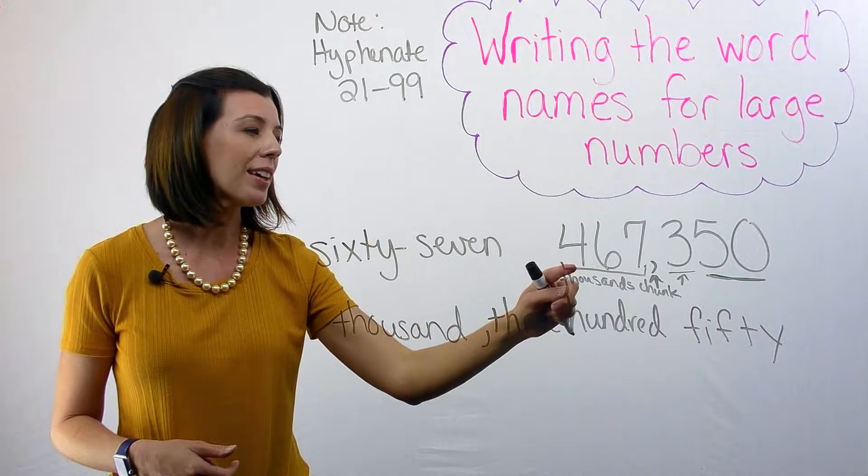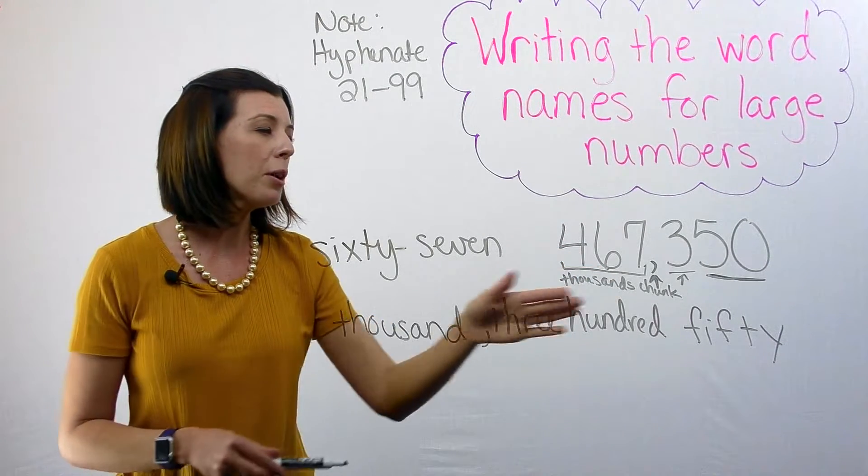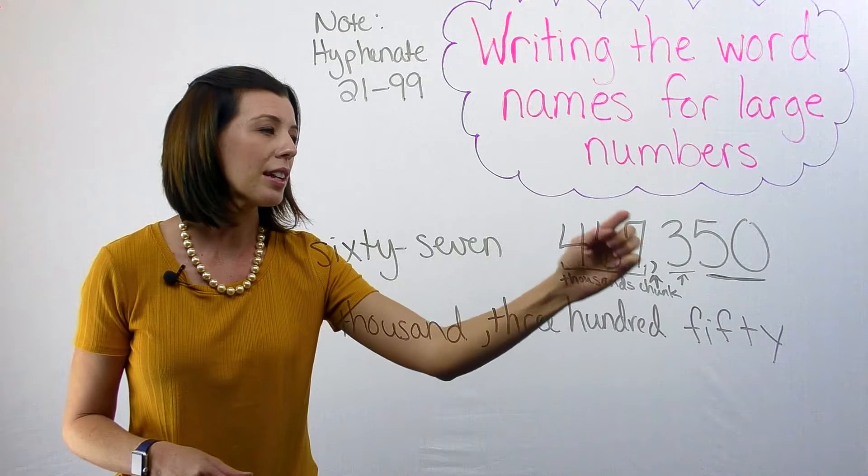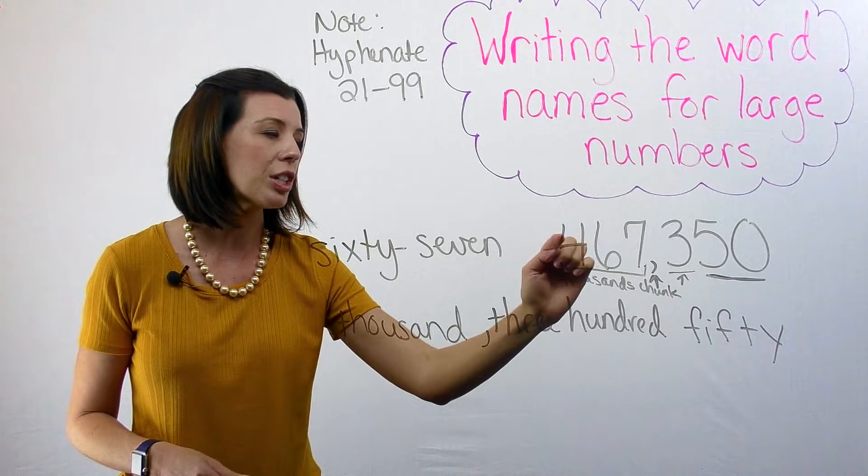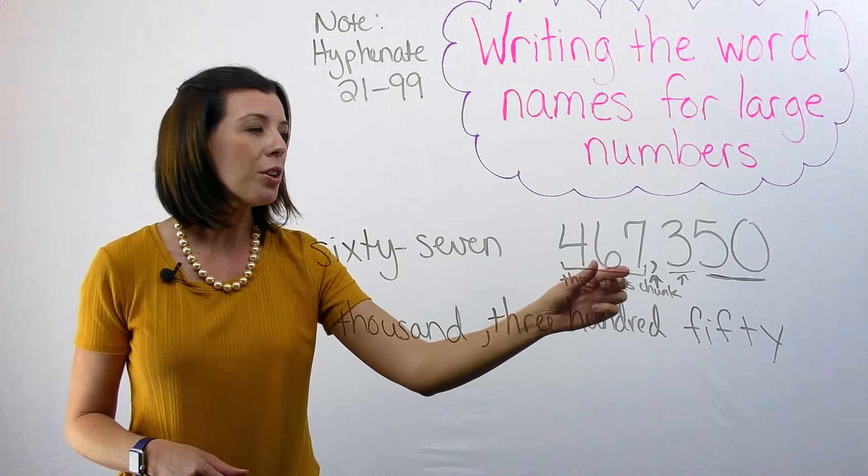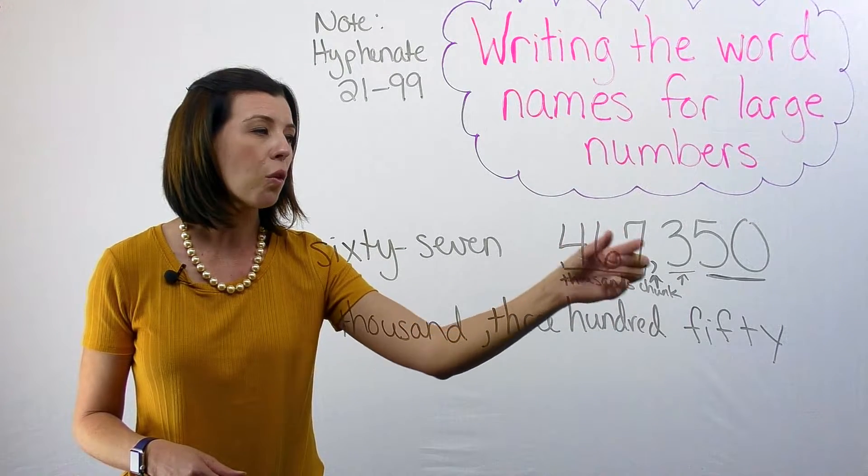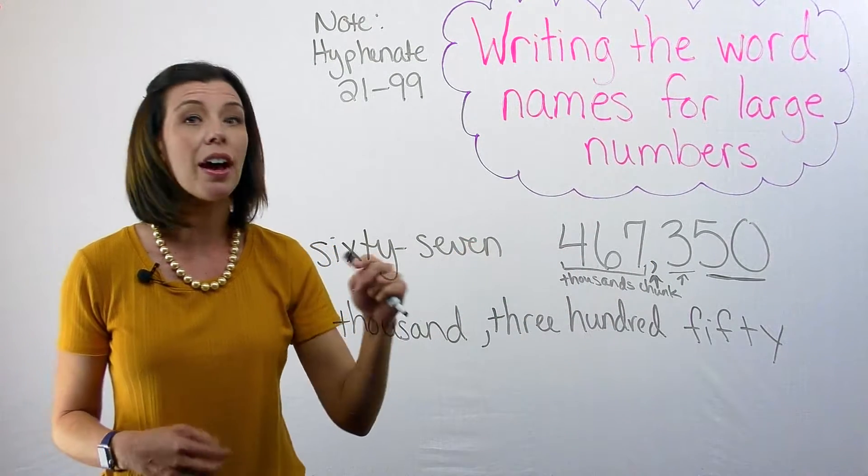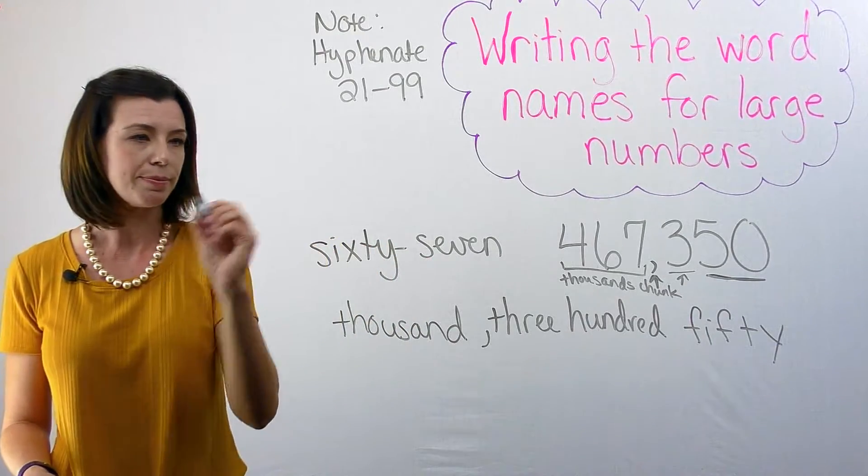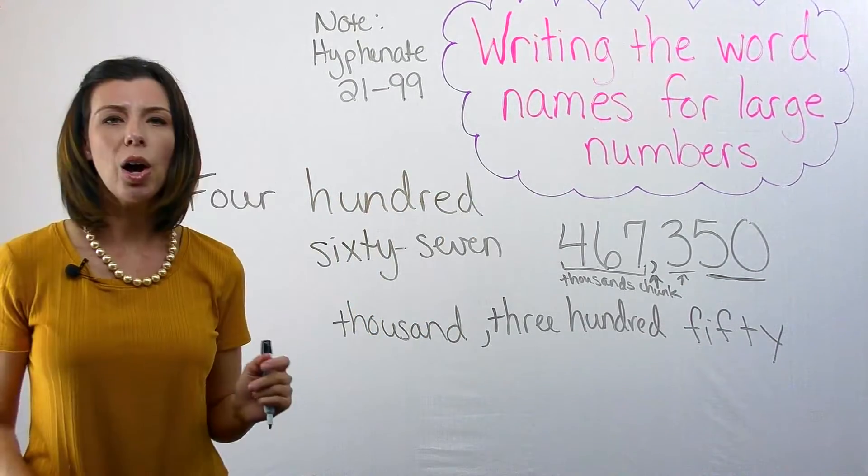So next, I'm going to look at this number right here. And again, I'm forgetting for a minute that this is a thousands chunk, because I just need to read these three digits. So 467. So I know that I have 67 here, this is 467. So I'm going to go ahead and add on that 467.